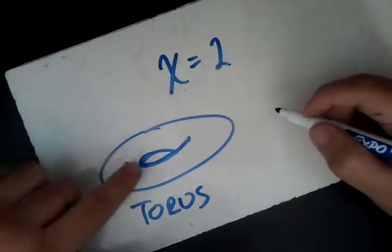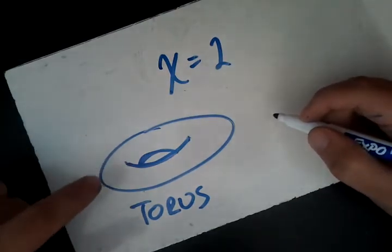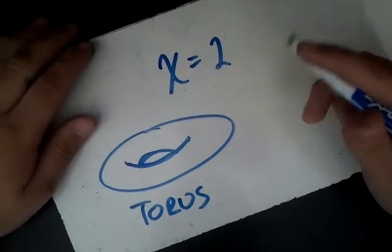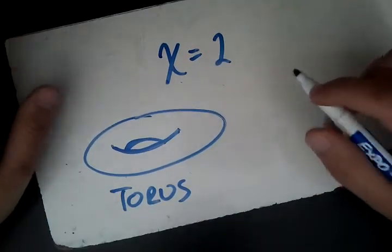But the hole prevents us from deforming the torus into a sphere. Because when we deform, we're not allowed to just squeeze in the hole. The hole is there and we can't do anything about it. Therefore, chi is not 2 for the torus.